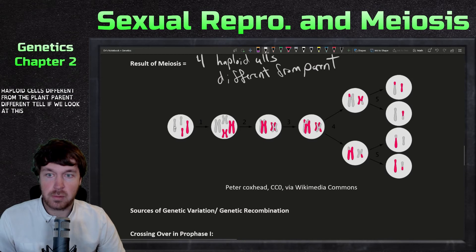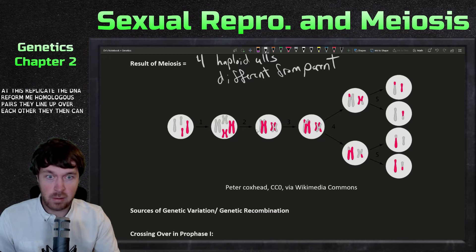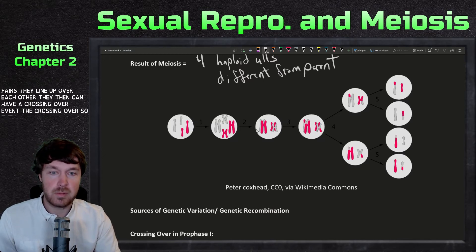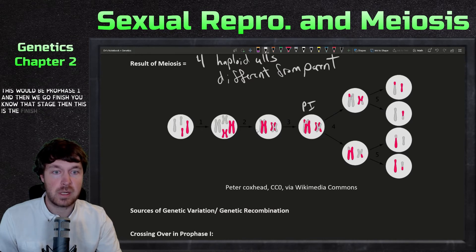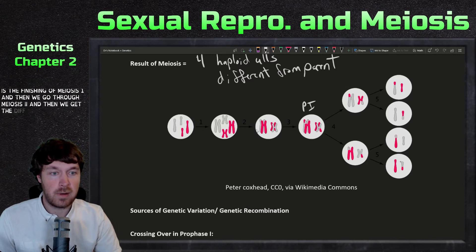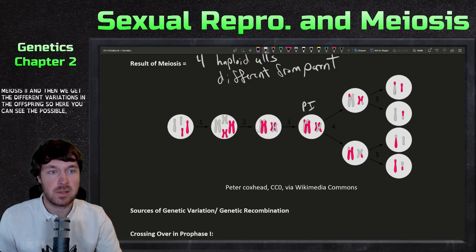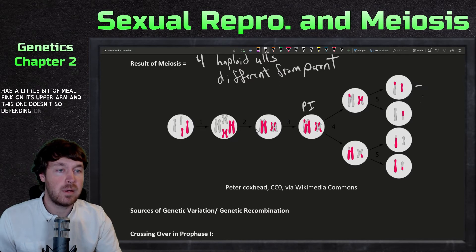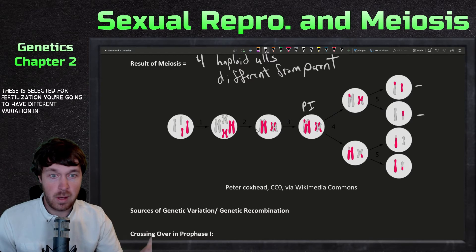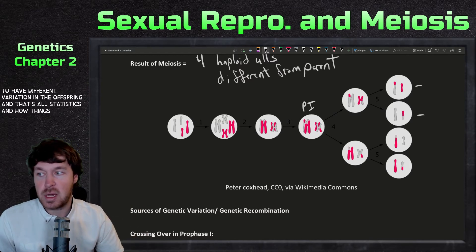The result of meiosis is four haploid cells different from the parent. We replicate the DNA, form the homologous pairs, they line up and have a crossing over event in prophase one, then finish meiosis one. Then we go through meiosis two and get different variations in the offspring. You can see the possible combinations — one has a little bit of pink on its upper arm and another doesn't — so depending on which one is selected for fertilization, you get different variation in the offspring.